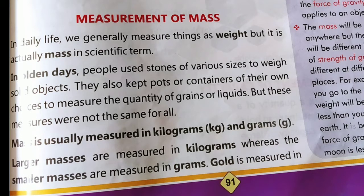Next is measurement of mass. In daily life we generally measure things in weight — हम अपने normal life में ज्यादातर चीजों को weight में measure करते हैं. But it is actually mass in scientific terms — लेकिन science की भाषा में इसे mass कहते हैं. In olden days, people used stones of various sizes to weigh solid objects — पुराने जमाने में लोग अलग-अलग size के stones का use करते थे किसी भी solid object को मापने के लिए. They also kept pots or containers of their own choices to measure the quantity of grains or liquids — वो अपनी choice के अलग-अलग बरतन भी रखते थे जिसमें वो किसी भी चीज की quantity जैसे grains और liquids को मापते थे. But these measures were not the same for all.